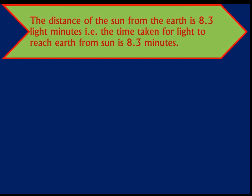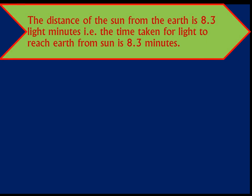You already learned about the unit used to measure distances in space — that is the light year. One light year means the distance traveled by light in one year. When we measure the distance of the sun from the Earth, it is equal to 8.3 light minutes. That is, it is the distance traveled by light in 8.3 minutes, or the light takes 8.3 minutes to reach the Earth from the sun.